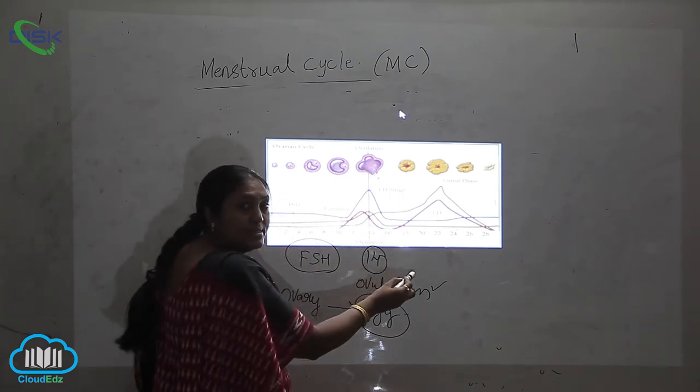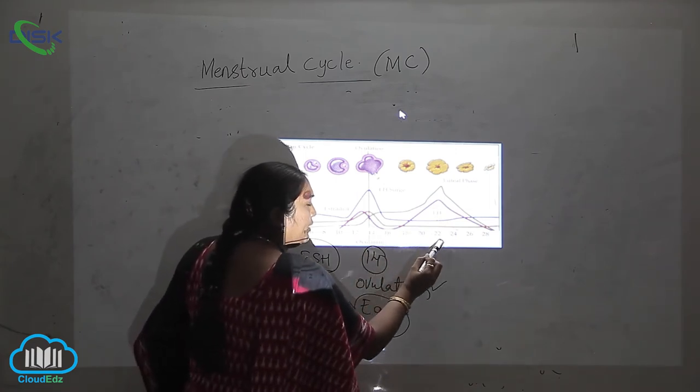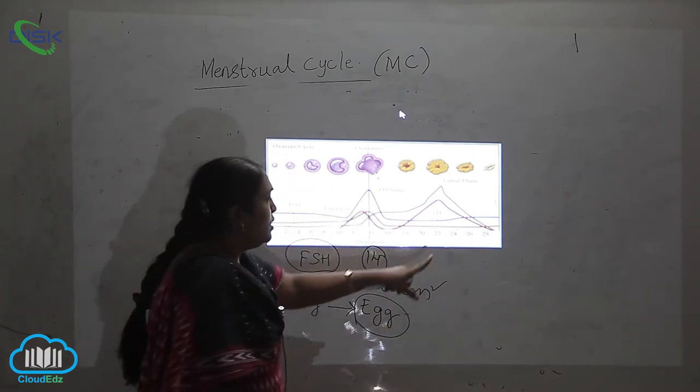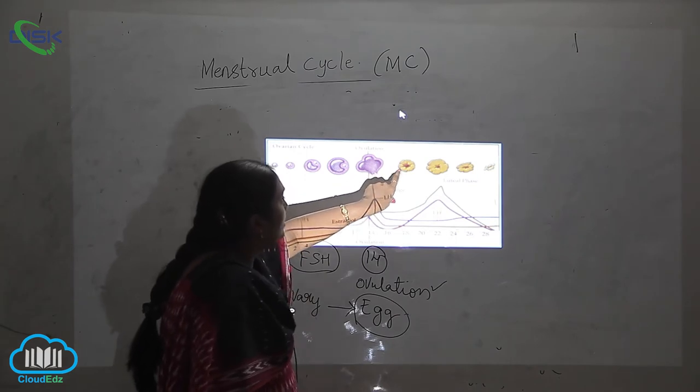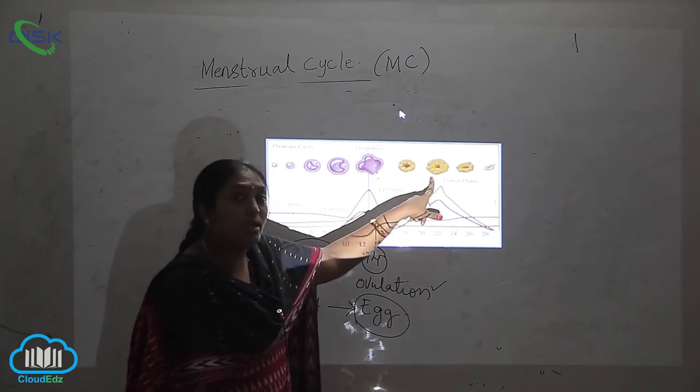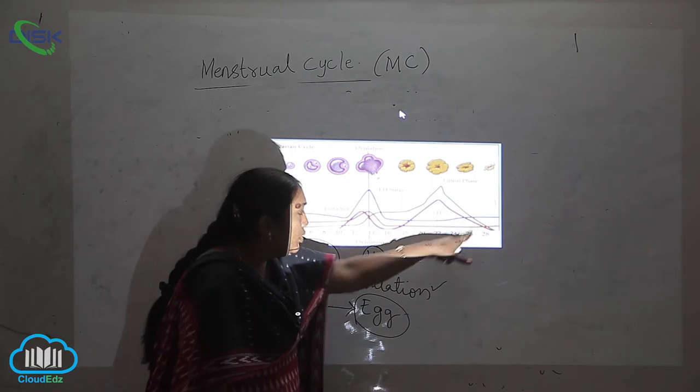Now coming to the next, that is the luteal phase. On the 16, 18, 20, 22, 24, 26, and 28, what is happening? When the fertilization does not occur, the corpus luteum will be changing into corpus albicans. This is called luteal phase.